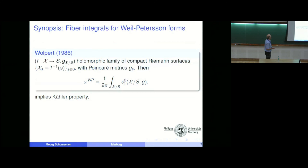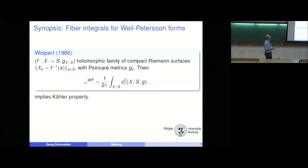Here is Wolpert's theorem concerning fiber integration. If we have a holomorphic family of compact Riemann surfaces — it can be part of the Teichmüller space but need not be — we have Poincaré metrics on the fibers. These give rise to metrics on the relative tangent bundle or the relative canonical bundle. The first Chern form with respect to the Poincaré metric is meaningful. C1 squared will be integrated and we are left with a 1-1 form which incidentally is the Weil-Petersson form, and already we can read off the Kähler property.